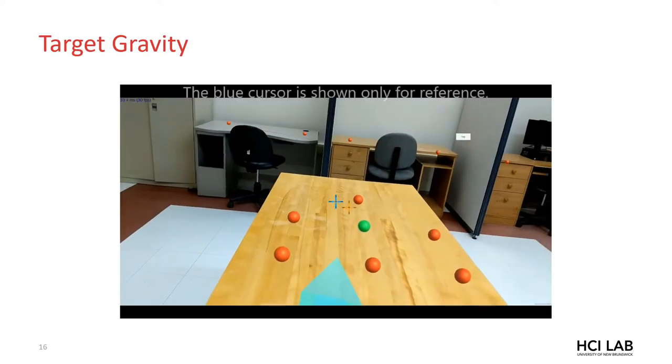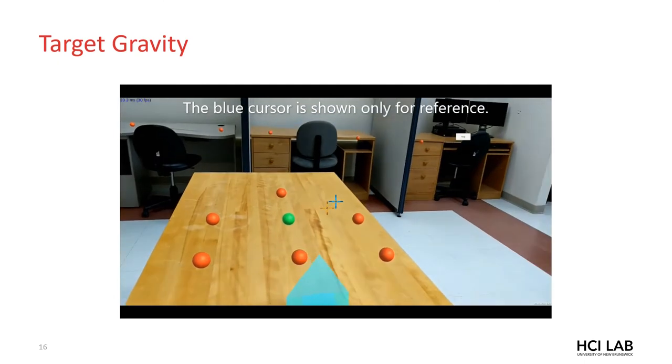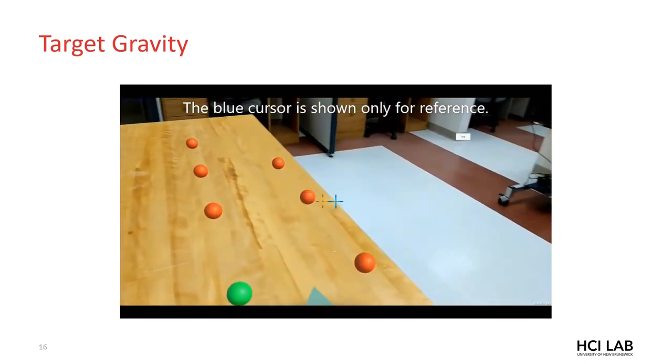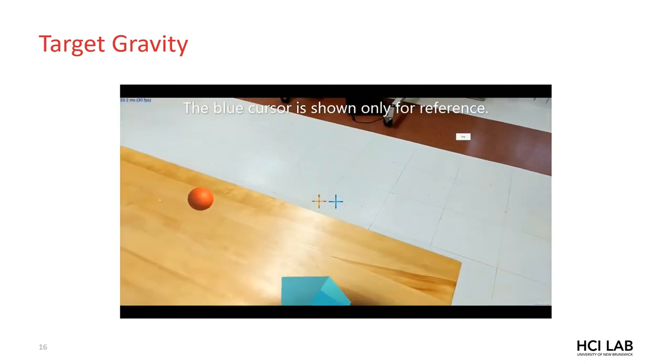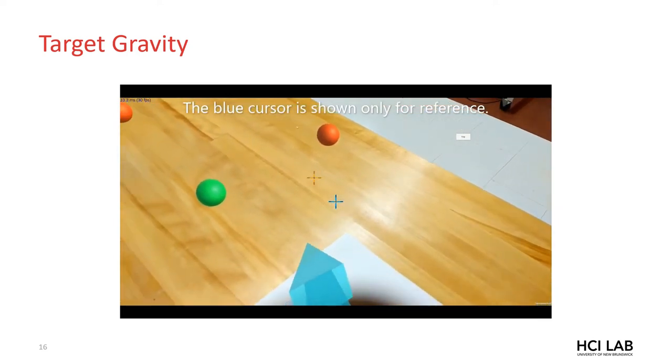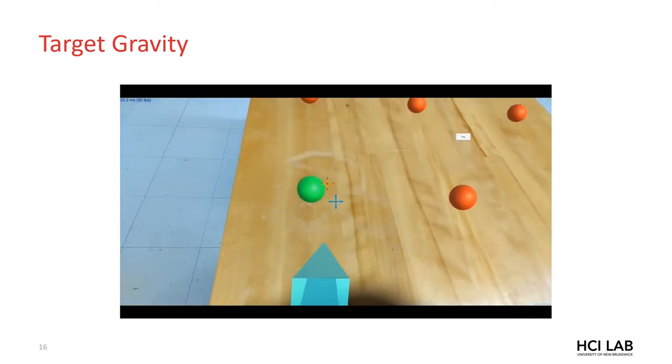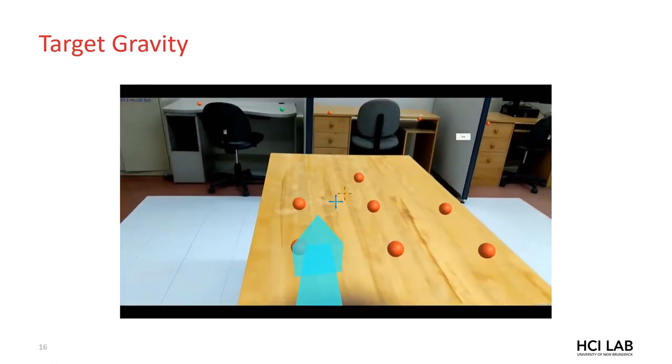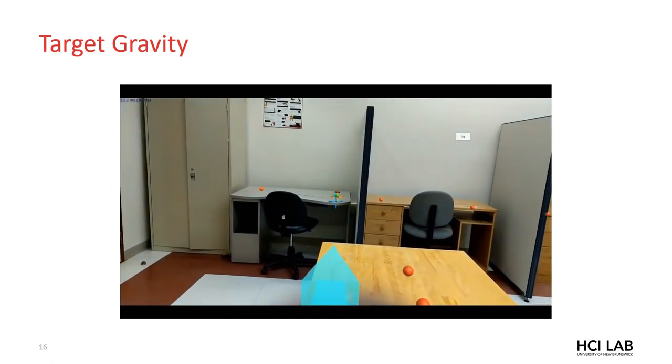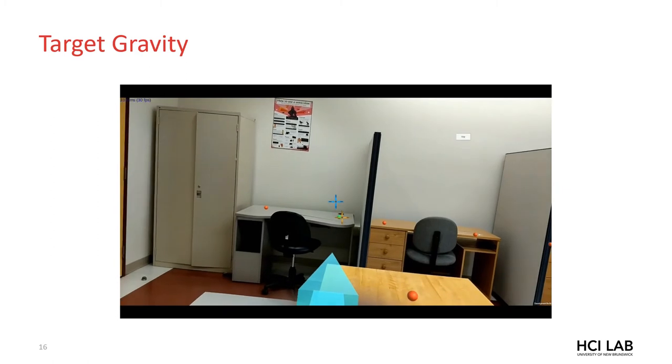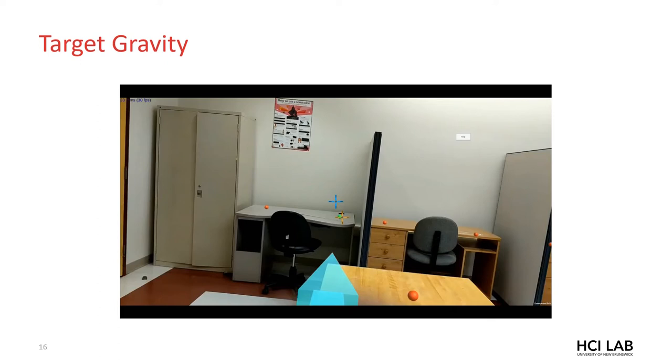Target gravity provides a gravitational force towards all targets on the screen. These forces are used to scale movements of the cursor. To demonstrate this effect, we show an additional cursor. The blue cursor is the baseline cursor and the orange cursor is the target gravity cursor. With target gravity, closer larger targets have more of a gravitational force, pulling the cursor more strongly. The idea is that this accelerates the cursor towards closer targets and helps it stay on the target once they've been reached.